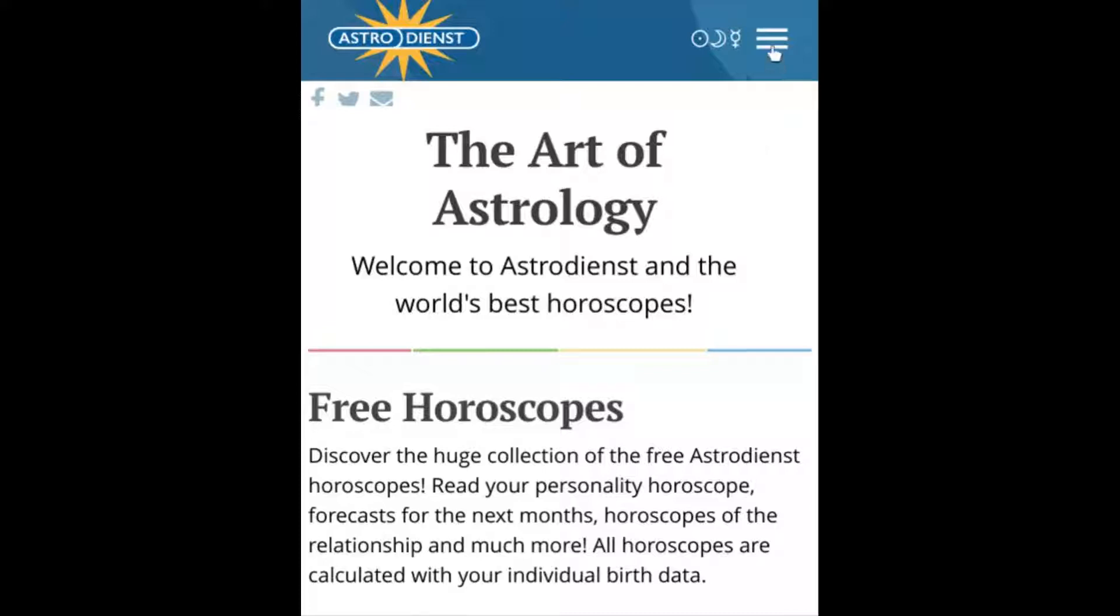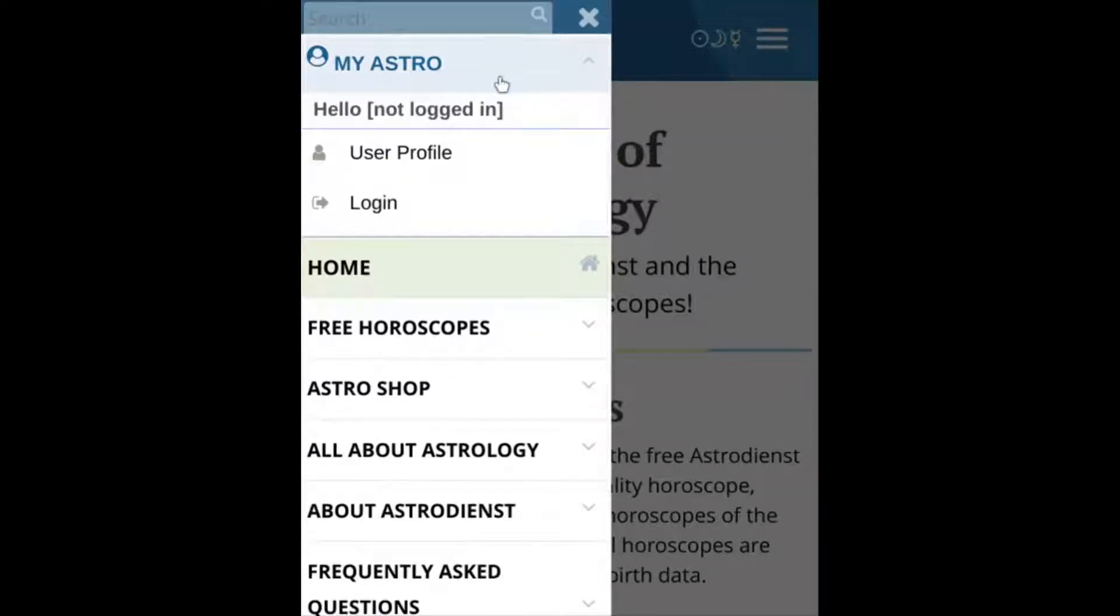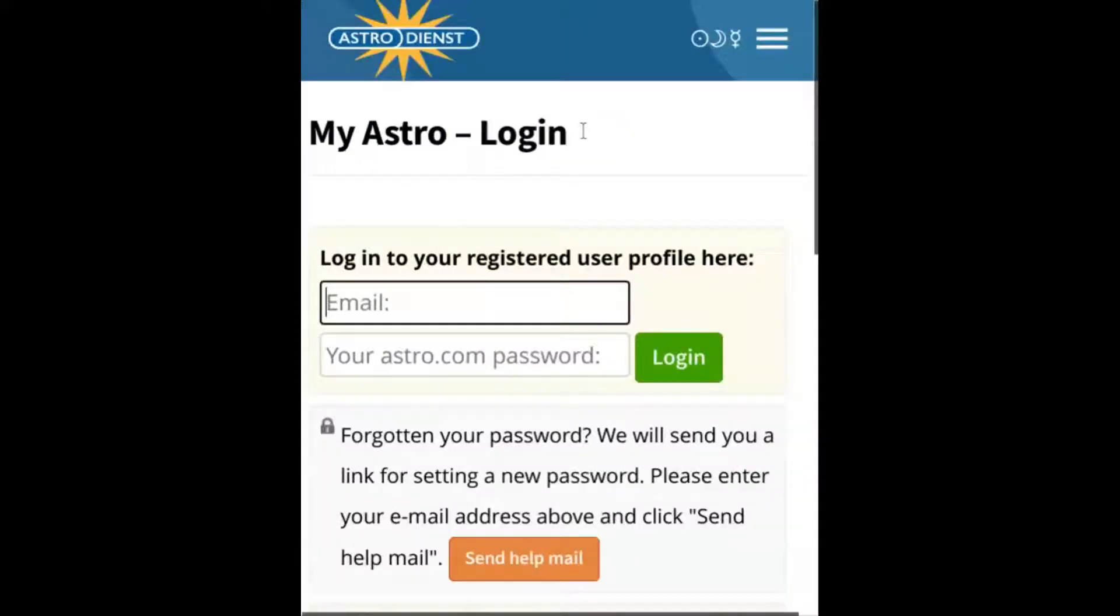This is what it should look like on mobile. Here you'll hit the hamburger icon, and My Astro will be the first in the list of options. Tap on that, and User Profile and Login are available. Tapping on User Profile, this is where it takes you.